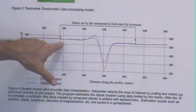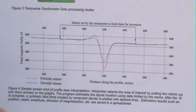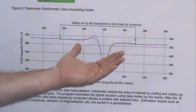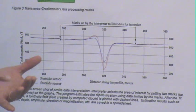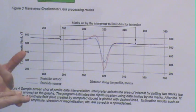We select these anomalies using markers set by the interpreter to limit the range for the inversion. Then the inversion is done automatically to give us latitude, longitude, position below the seafloor.